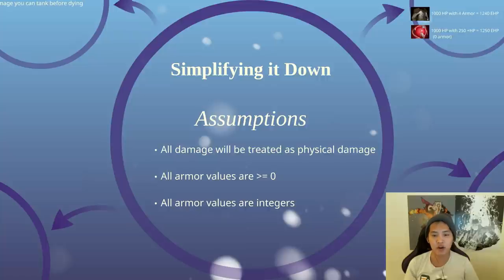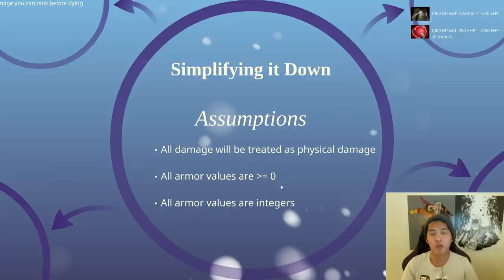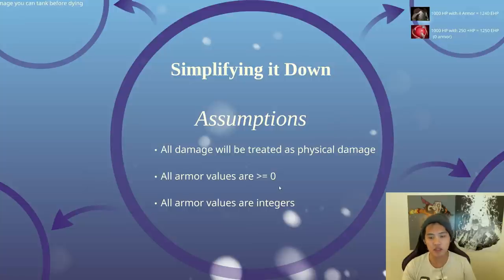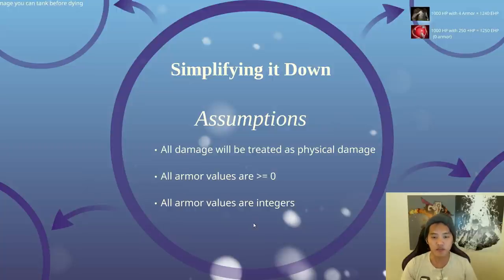Next, all armor values are going to be greater than or equal to zero. This is because the formula for calculating armor and damage is going to be different at positive armor values and negative armor values. And since you'll mostly be dealing with positive armor, I'm going to simplify and make it non-negative. So all armor values are going to be integers, just so we don't have to deal with any nasty decimals — God forbid.